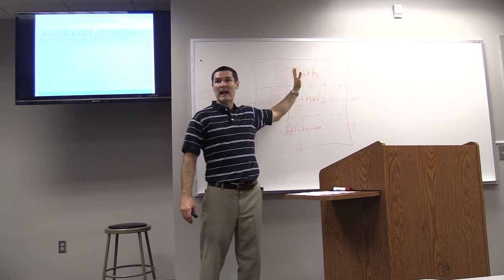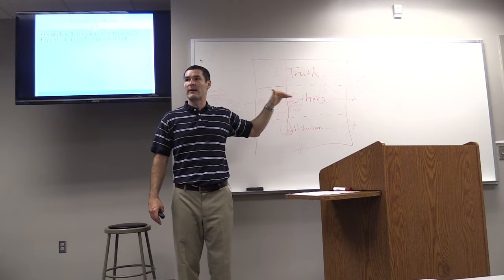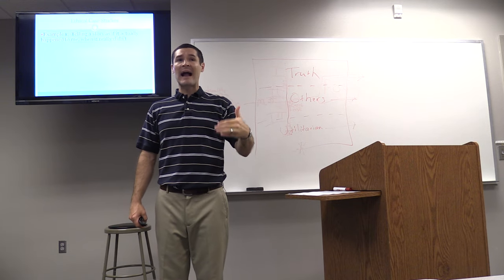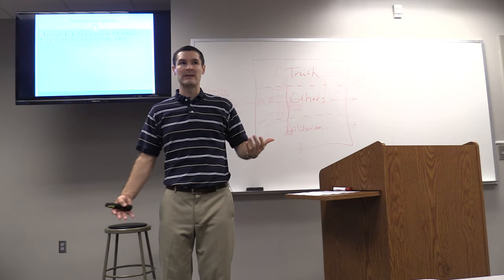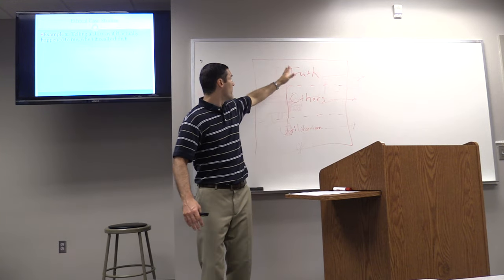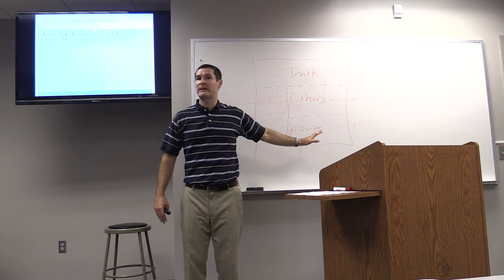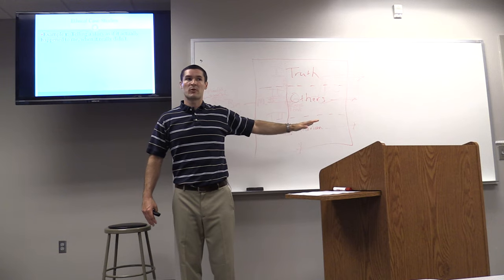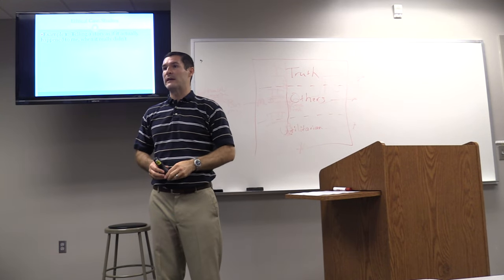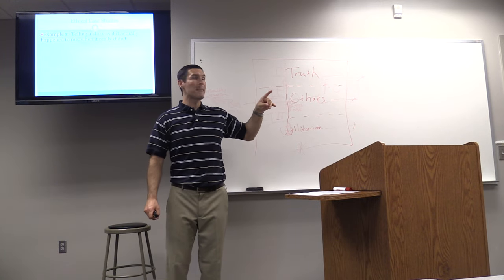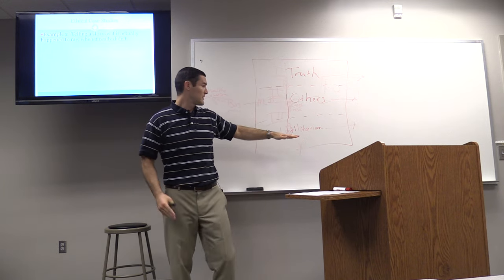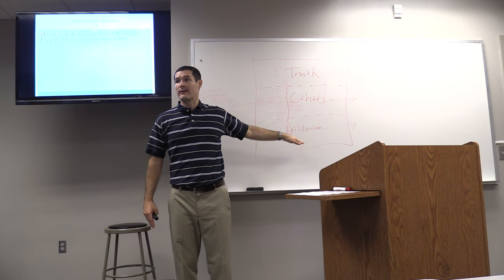But let's say, hypothetically, that it passed that first grid. So then we come to the unto others level. So if you were an audience member, would you want a speaker telling you a story as if it happened to them, when in reality, it didn't? Would you like that? Probably not. So if somehow it made it through the first grid, you kick it out at the second grid. But let's say, hypothetically, that it makes it through both layers, and gets down here to the utilitarian benefit. Does it provide greater benefit than if you leave it out?